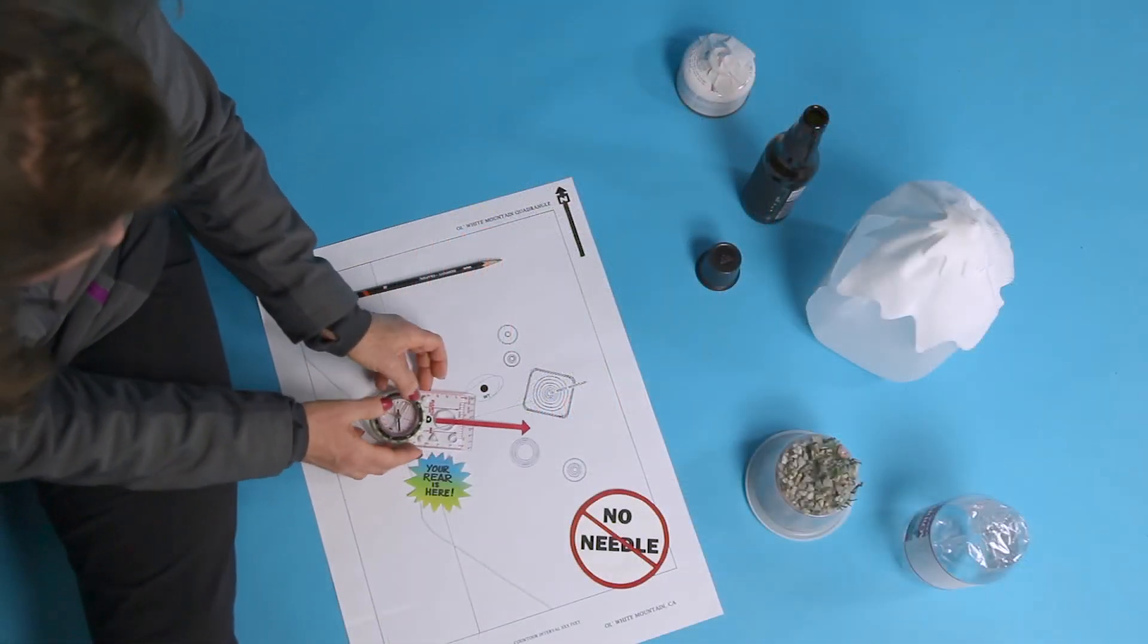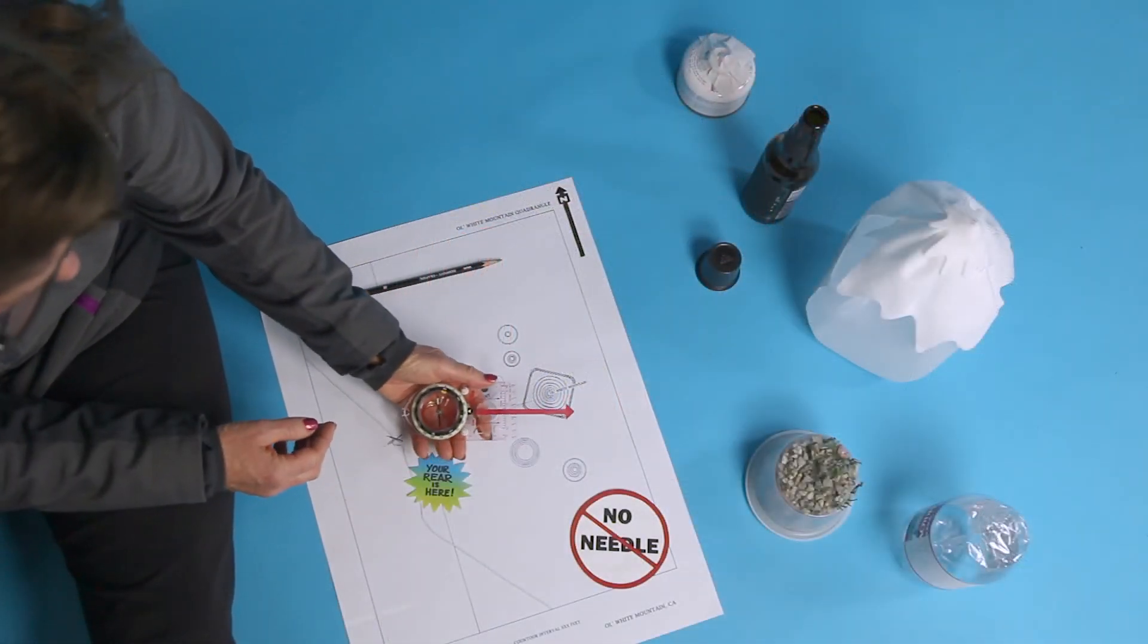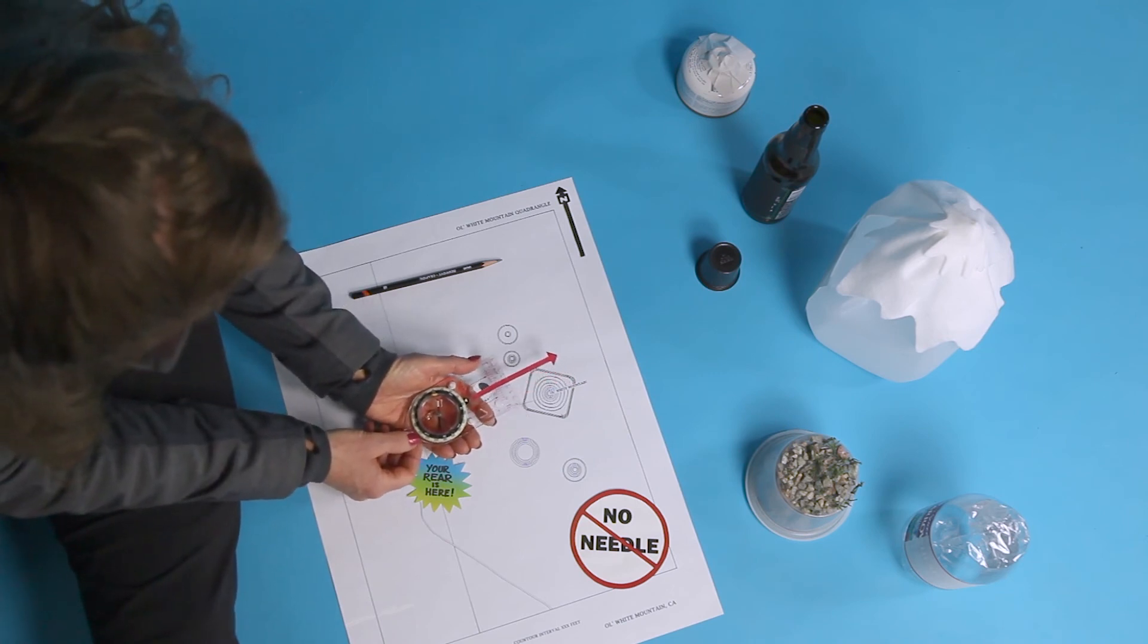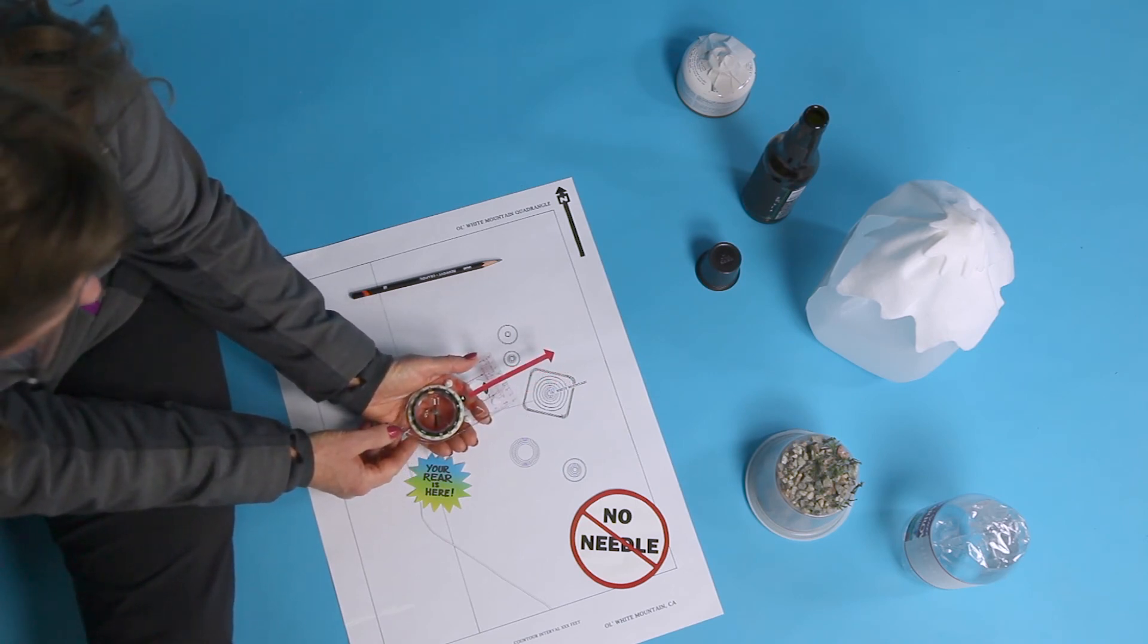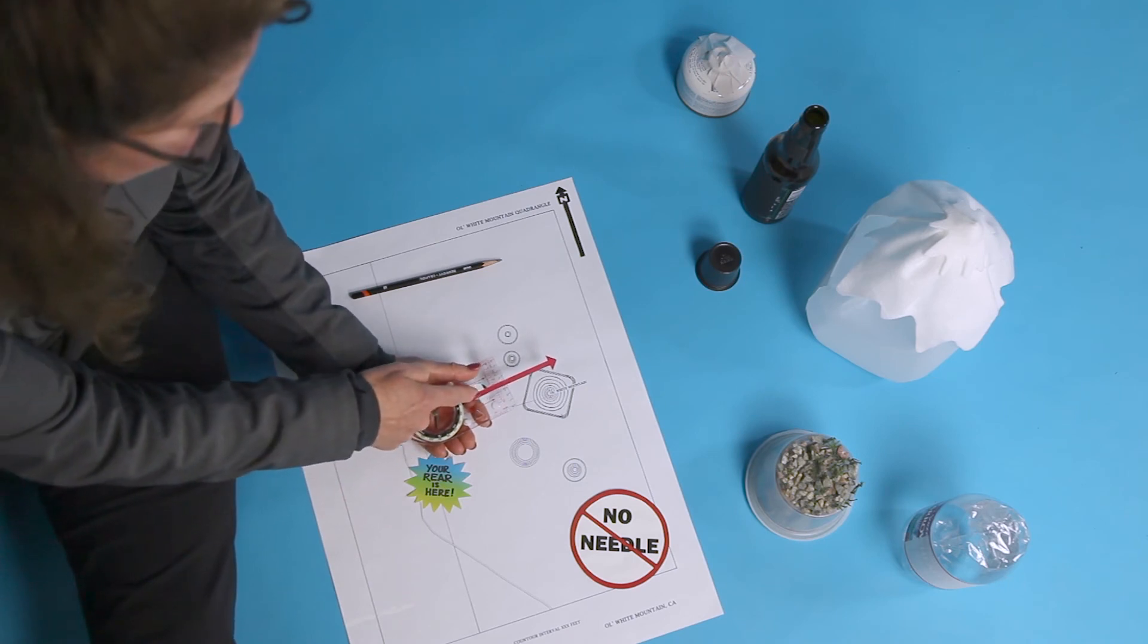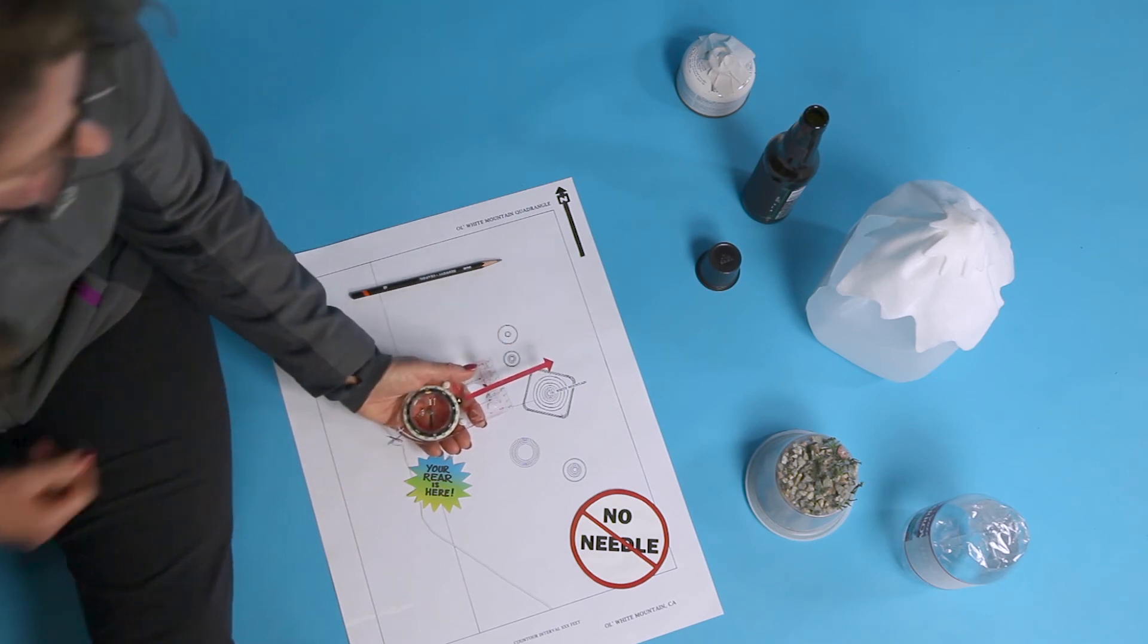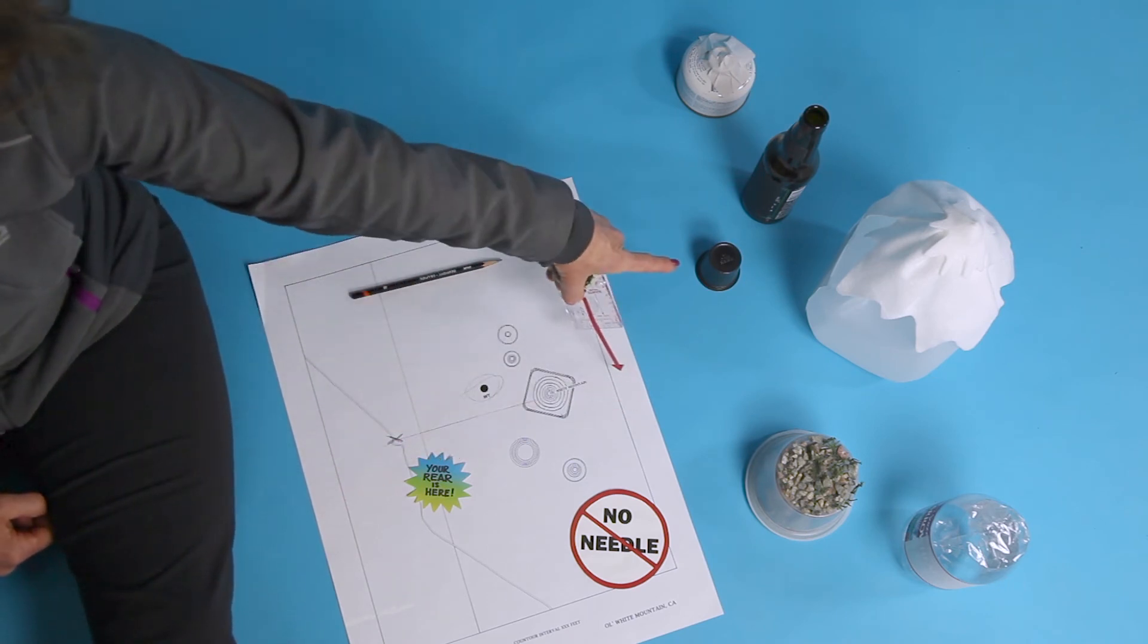Now don't turn the ring again, right? Just pick up the compass and turn your whole body and the compass together to trap the needle. The direction of travel arrow points to the WT. Hey, Cece! It's a water tank!